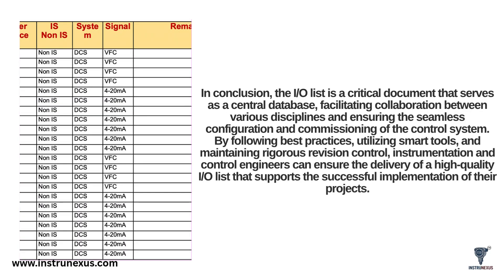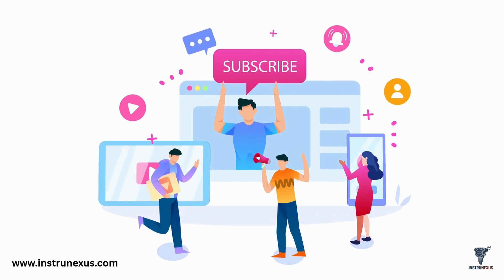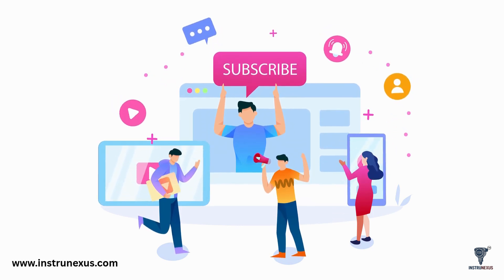In conclusion, the IO List is truly a critical document. It is the central database that facilitates collaboration between all disciplines and ensures the seamless configuration and commissioning of the entire control system. By following the best practices discussed today – using smart database-driven tools, maintaining rigorous revision control, and adhering to a formal validation and review workflow – instrumentation and control engineers can ensure the delivery of a high-quality, accurate IO List. This document is the foundation that supports the successful implementation of the project, from the initial design all the way to a smooth and safe startup. If you enjoyed this video, please like, comment, and share it with a friend. Don't forget to subscribe.